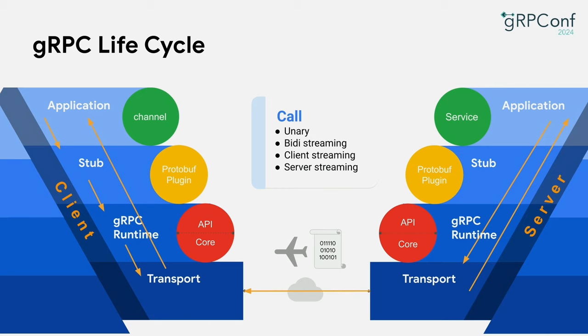If you configure observability — say, OpenTelemetry — then you can see retry information such as retry attempts and retry latencies in OpenTelemetry metrics and tracing.